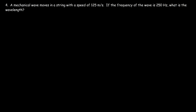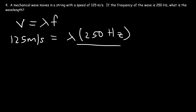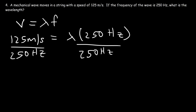Number 4. A mechanical wave moves in a string with a speed of 125 meters per second. If the frequency of the wave is 250 hertz, what is the wavelength? The speed of a wave is equal to the wavelength times the frequency. To calculate the wavelength, it's the wave speed divided by the frequency. So 125 divided by 250 is 0.5 meters.